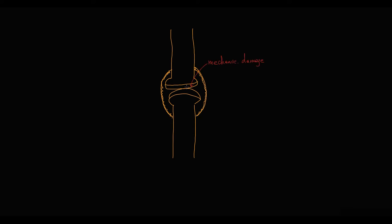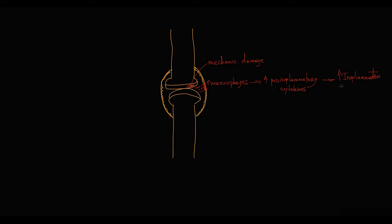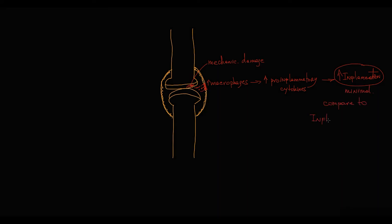When mechanical damage causes cartilage destruction, fragments of cartilage break off and come in contact with the synovial inner layer, stimulating macrophages. Macrophages then promote inflammation by secreting pro-inflammatory cytokines. Additionally, even when macrophages promote inflammation, the severity in osteoarthritis is minimal compared to inflammatory joint diseases like rheumatoid arthritis.